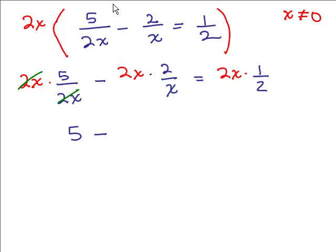And that's the way to clear denominators because we'll be able to cancel some things. So we have 5 minus—now the x's cancel here, so 2 times 2 is 4. And then the third one, the 2s cancel, so I just get x. So I have 5 minus 4 is x. This is going to be an easy one. X is equal to 1.